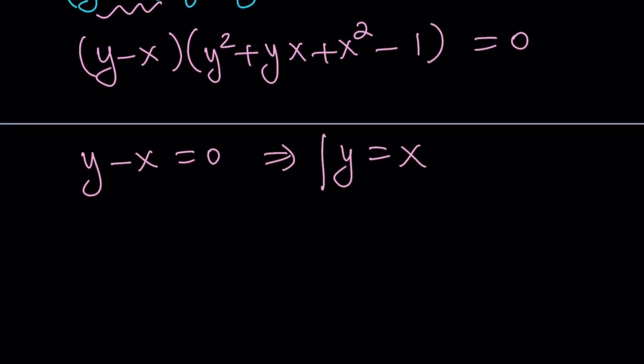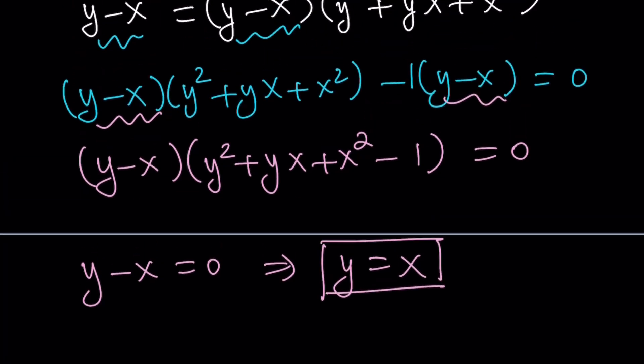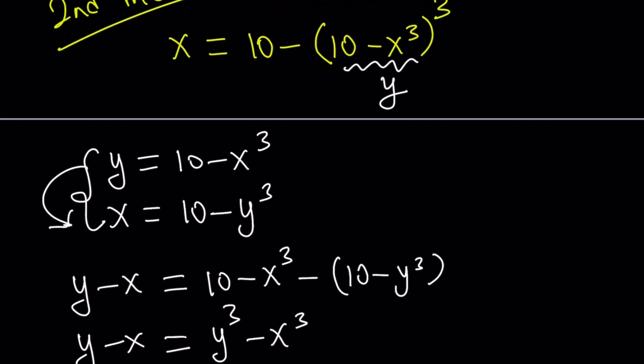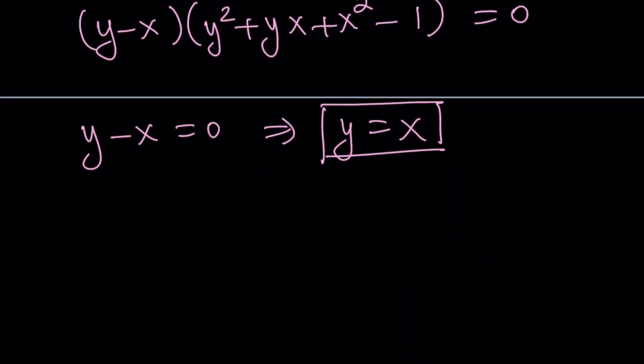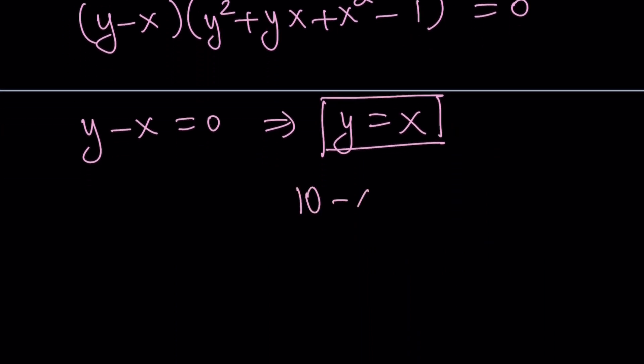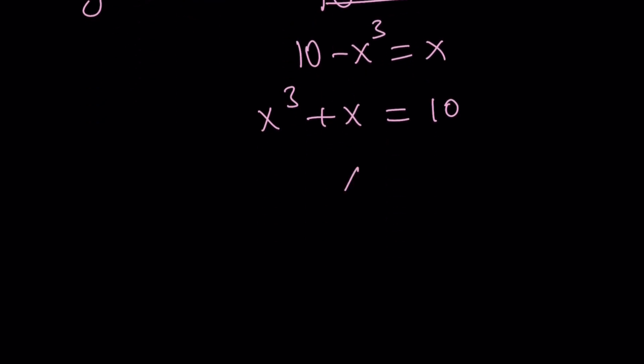Anyways, we've got y equals x, which is very powerful. But what is y? Let's go back. y is equal to 10 minus x cubed. So let's go ahead and back substitute. y is 10 minus x cubed. So we get this. This is a cubic equation. Let's put the x terms on the same side and flip. And we get x cubed plus x equals 10. So this is nice, because I can guess. x equals 2. Yay!